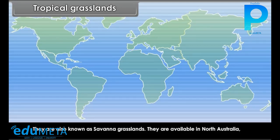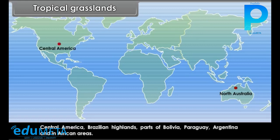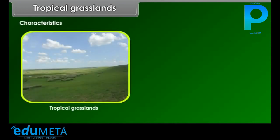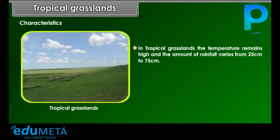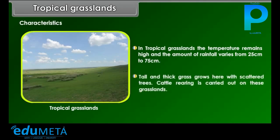There are two types of grasslands — tropical and temperate. Tropical grasslands, also known as Savannah grasslands, are available in North Australia, Central America, Brazilian Highlands, parts of Bolivia, Paraguay, Argentina and African areas. In tropical grasslands, the temperature remains high and the amount of rainfall varies from 25 cm to 75 cm. Tall and thick grass grows here with scattered trees, and cattle rearing is carried out on these grasslands.